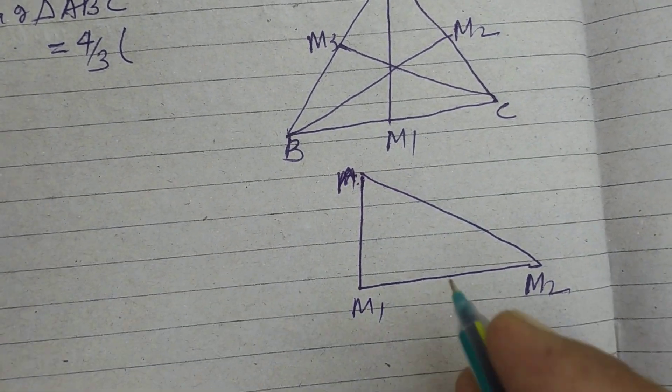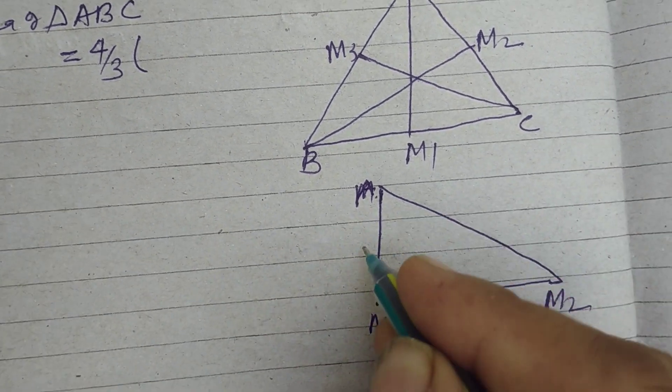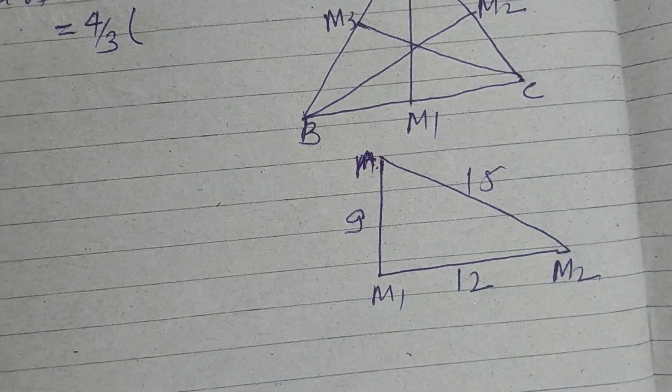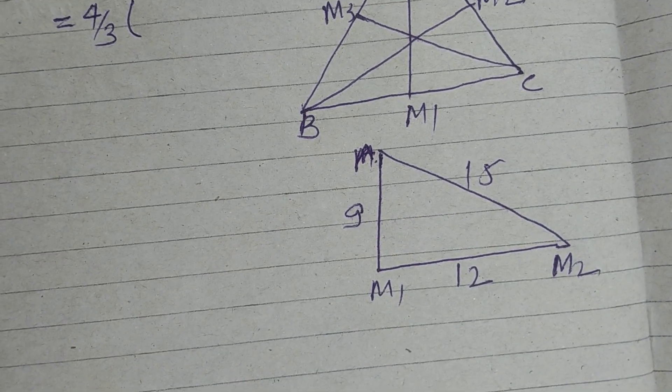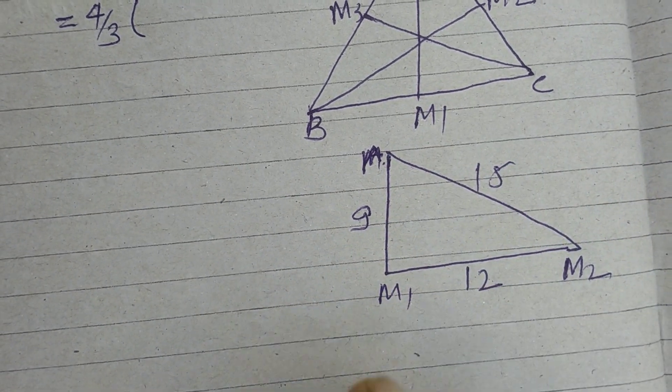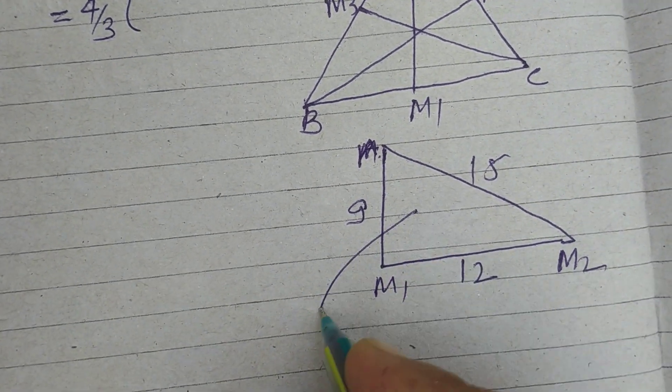We take these sides, which are given as 9, 12 and 15. So taking their median as sides, we find the area of this triangle.